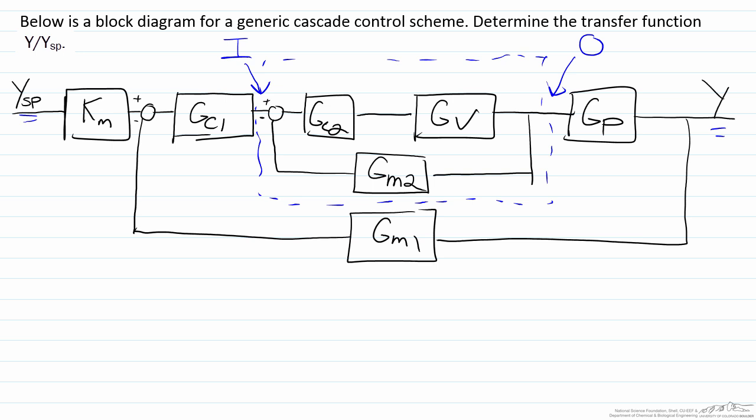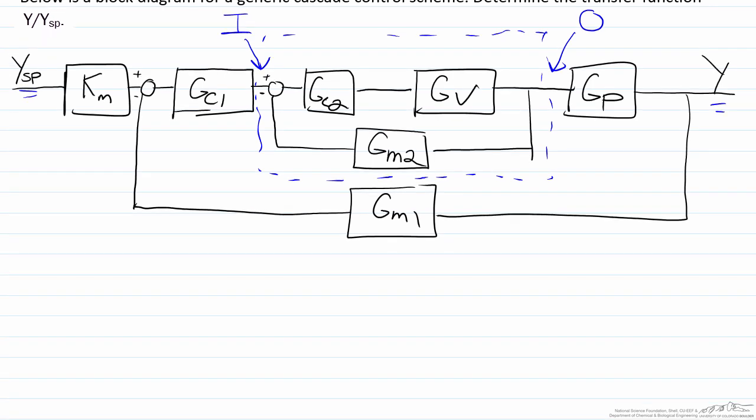This looks very similar to a regular feedback control loop block diagram. If this part is O, that would represent all of these are O. So therefore at the summing point here we would have I minus O times Gm2 Gc2. After the summing point it goes through two blocks, the secondary controller Gc2 and the valve Gv. Once it goes through there we have reached this final point here, so this will equal O.